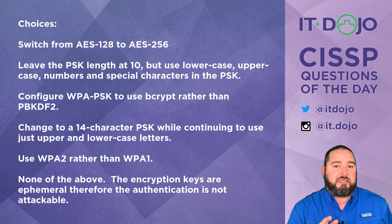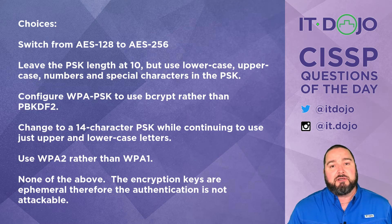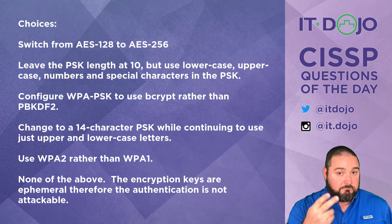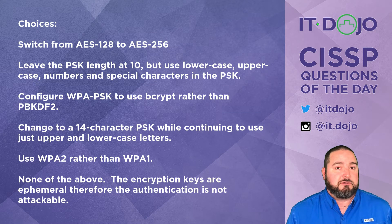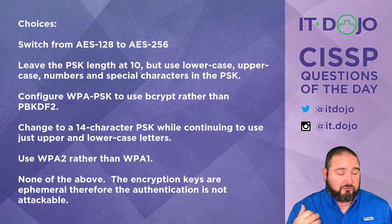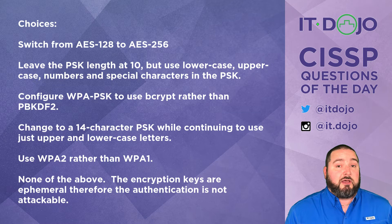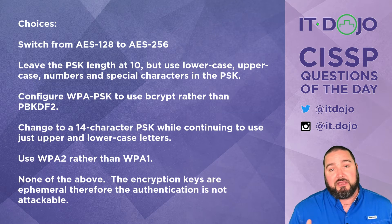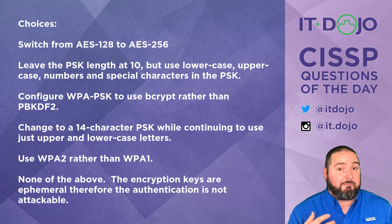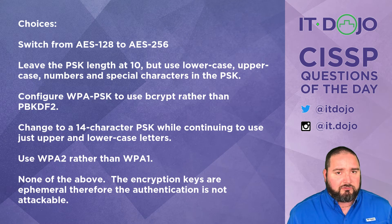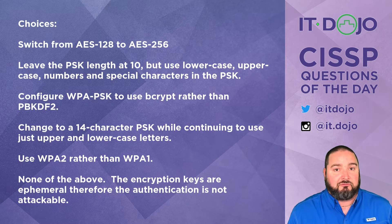The second choice says to leave the pre-shared key at 10 characters but include additional character sets — uppercase, lowercase, numbers, and special characters. That's not the right answer either. The third choice says to switch to bcrypt rather than PBKDF2. PBKDF2 stands for the Password-Based Key Derivation Function. Both bcrypt and PBKDF2 are key stretching techniques, but the standard WPA-PSK implementation uses PBKDF2, and switching to bcrypt isn't really an available or necessary option.